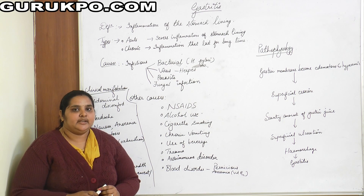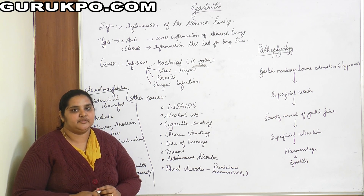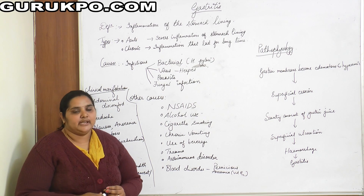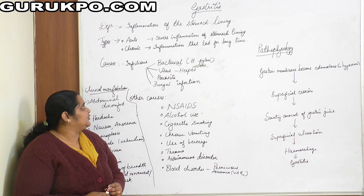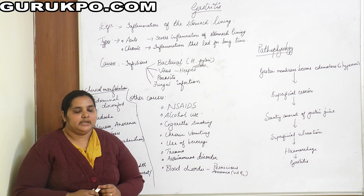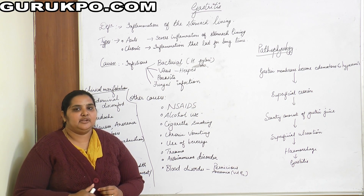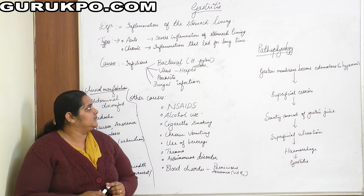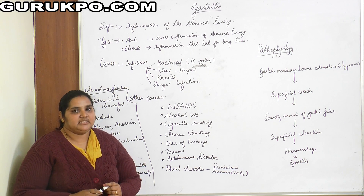Acute gastritis is a sudden onset condition — it may occur because of food poisoning or because of taking certain drugs, and is defined as severe inflammation of the stomach lining. Chronic gastritis occurs when the initial acute gastritis is not healed; it lasts for a long period of time and is defined as inflammation that persists for a long period.